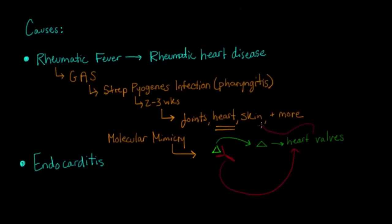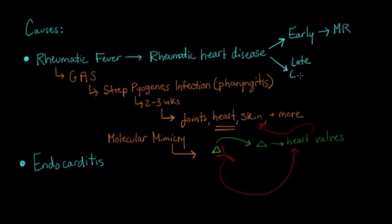The reason you get all the other symptoms is because those antigens are also found in those parts of the body — the joints, the skin, and other things. Now, the early lesion of rheumatic heart disease is mitral regurgitation. But the late lesion — meaning when you've had repeated bouts of this rheumatic heart disease or infection with Strep pyogenes — you actually get mitral stenosis, which is characteristic for rheumatic heart disease.